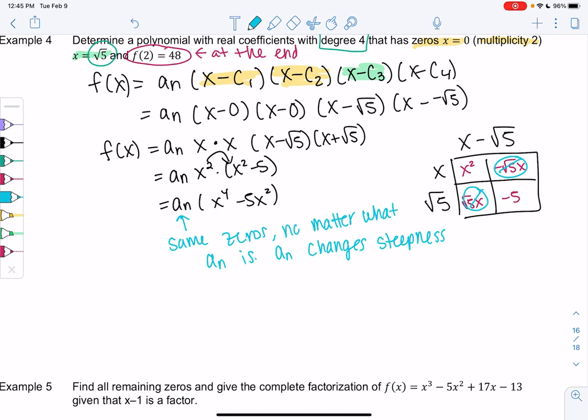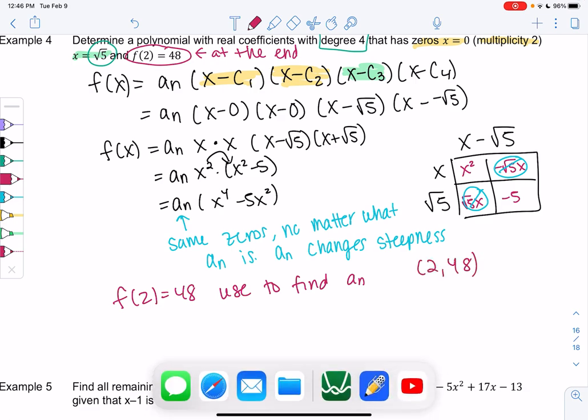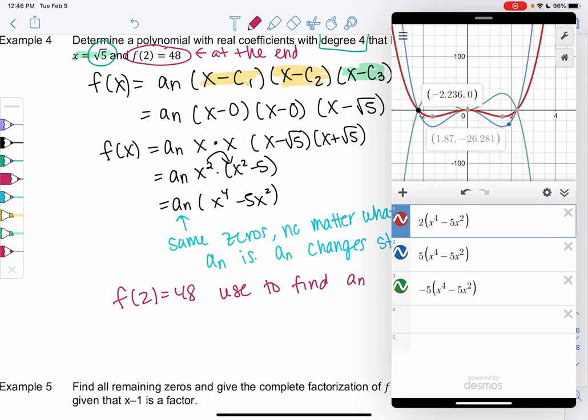So we'll use that condition. We call f of 2 equals 48 a condition. We'll use that to solve for a_n. So we want to find the version of this graph that goes through the point (2, 48). So all of these had the same zeros, but I don't know that they all went through (2, 48). So we'll go ahead and solve for that.